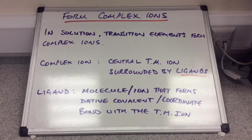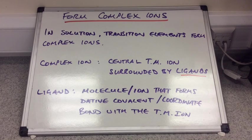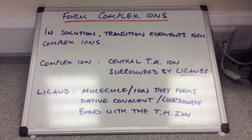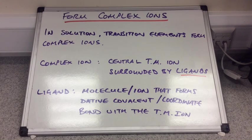The second of these properties is that the transition elements can form complex ions. In solution, transition elements form complex ions. They're described as having a central transition metal ion surrounded by ligands. A ligand is a molecule or an ion that forms a dative covalent or coordinate bond with that central transition metal ion.